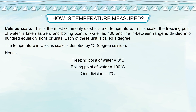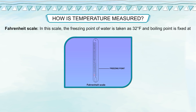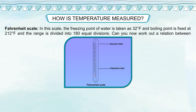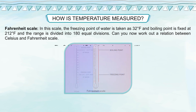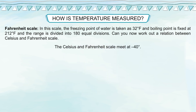One division equals 1 degree Celsius. Fahrenheit scale: In this scale, the freezing point of water is taken as 32°F and the boiling point is fixed at 212°F, and the range is divided into 180 equal divisions. Can you now work out a relation between Celsius and Fahrenheit scale? The Celsius and Fahrenheit scales meet at minus 40 degrees — this means −40°C equals −40°F.